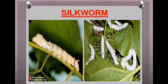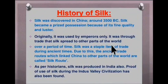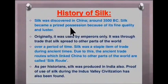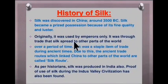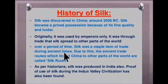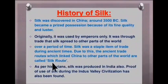Here is the diagram of the silk worm. Silk was discovered in China around 3500 BC. It became a prized possession because of its fine quality and lustre. Originally it was used by emperors only. Through trade, silk spread to other parts of the world and became a staple item of trade during ancient times. Due to this, the ancient trade routes linking China to other parts of the world are called silk routes.